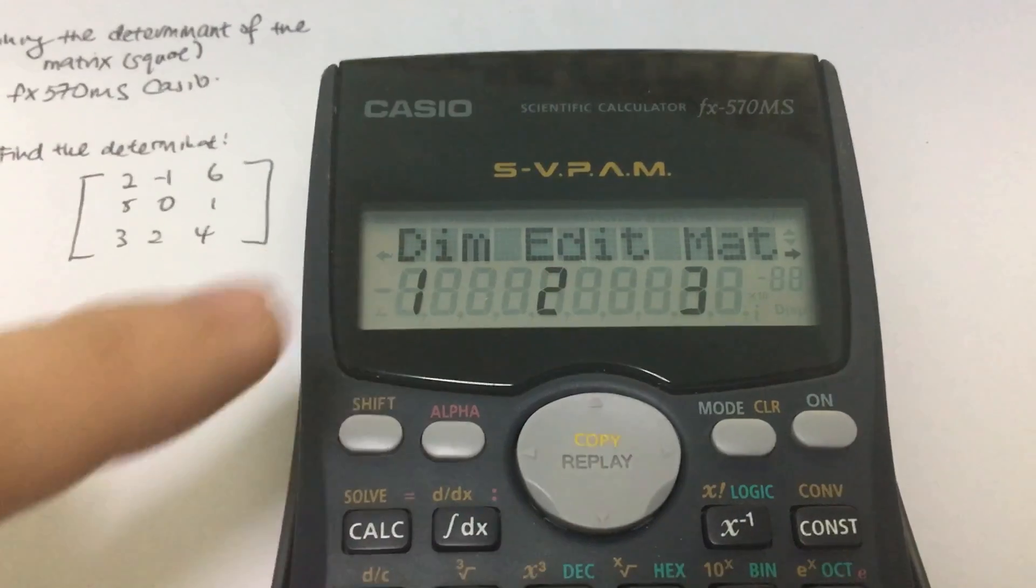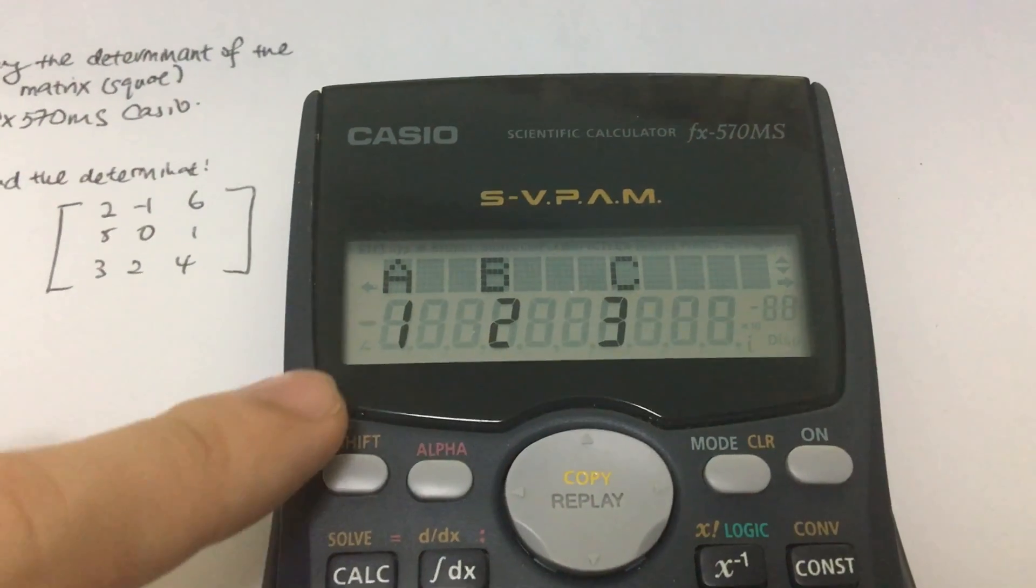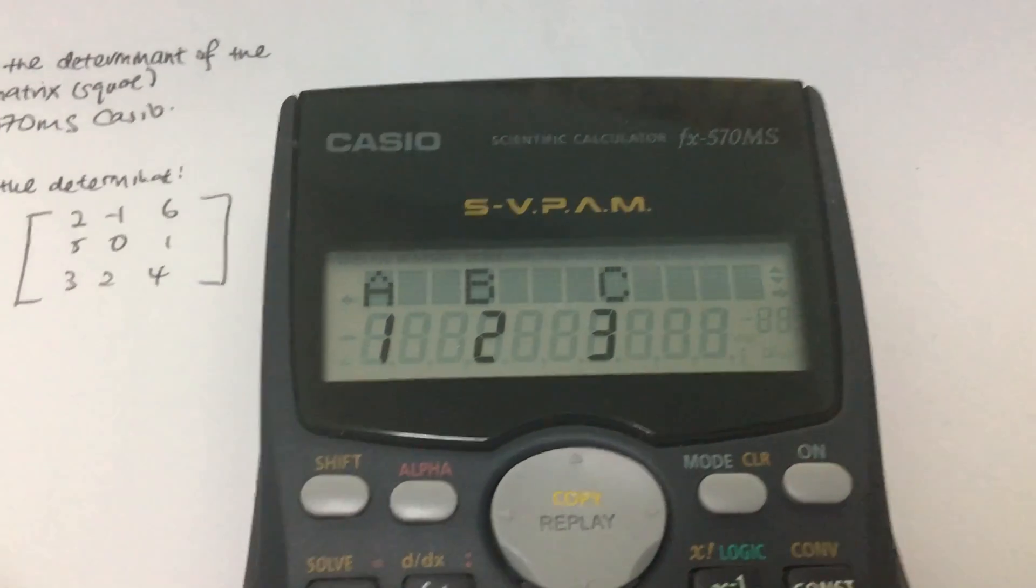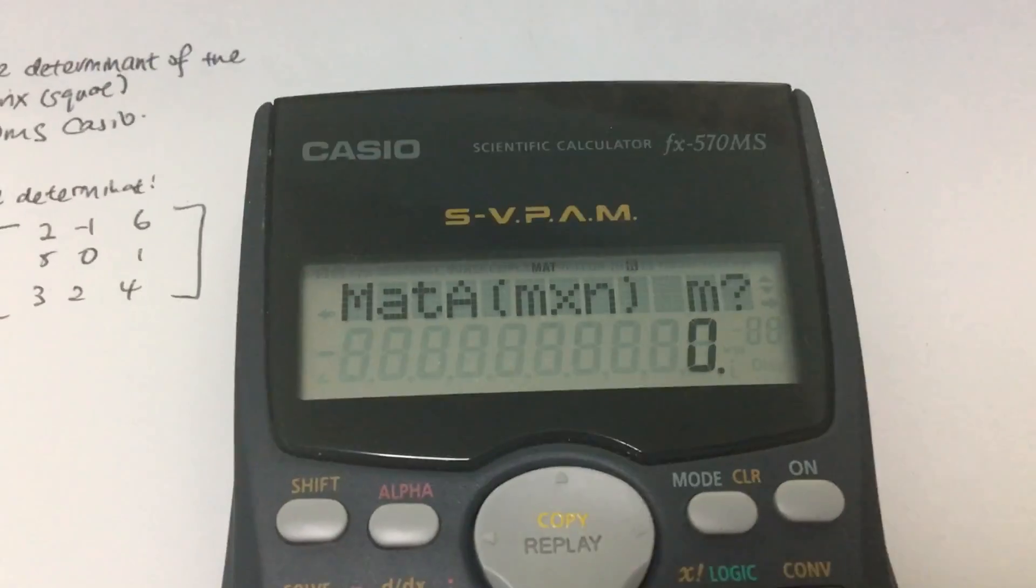DIM represents the dimension, setting the dimension. So we press one and there are three different matrix A, B or C. So we will use matrix A.